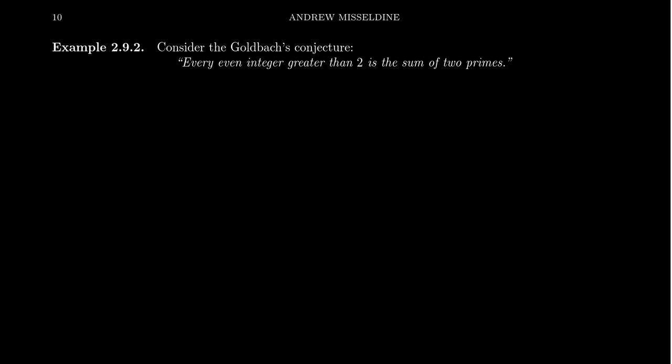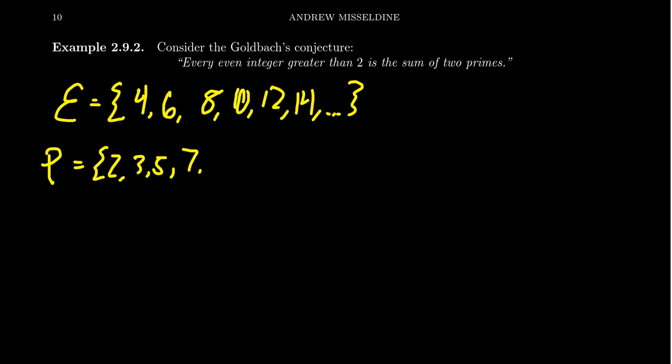Now, for the purposes of this example here, we'll introduce two sets. We'll call E the set of even integers greater than 2. So this will be like 4, 6, 8, 10, 12, 14, etc. And we're also going to introduce the set of primes. So we get 2, 3, 5, 7, 11, 13, etc. So we have these two sets.